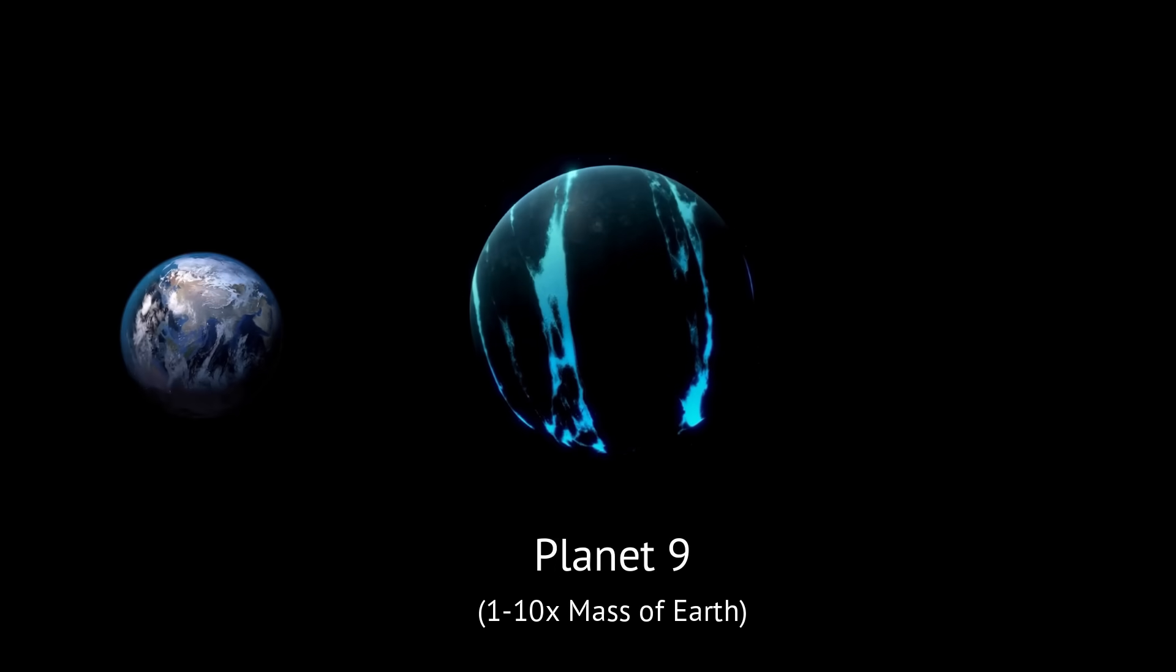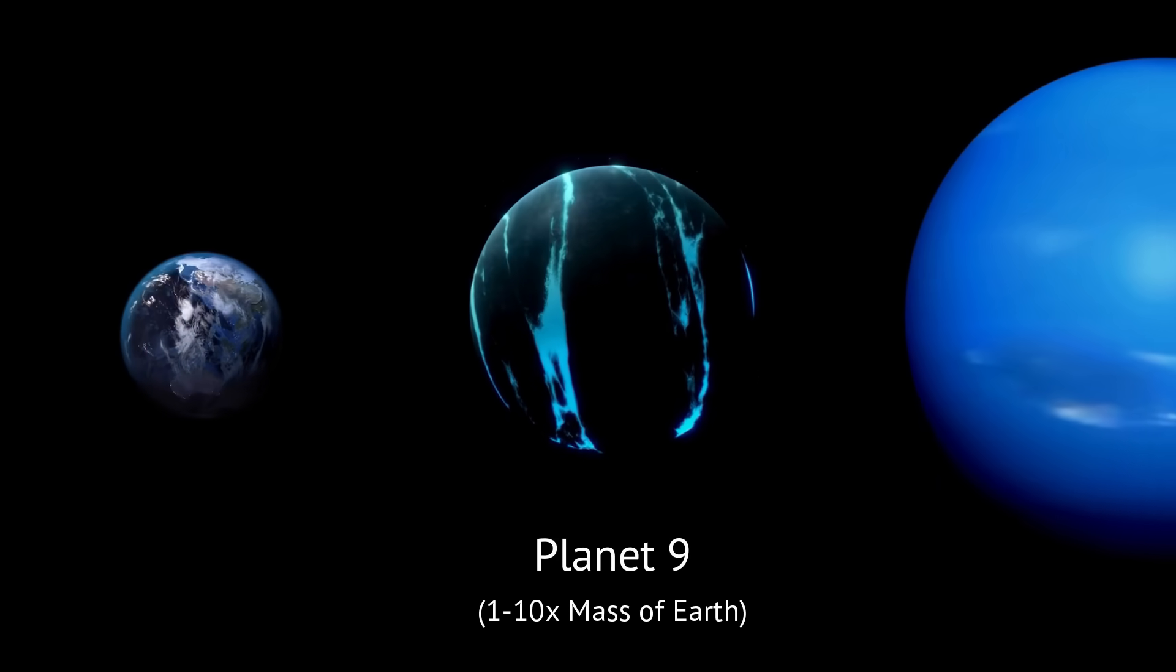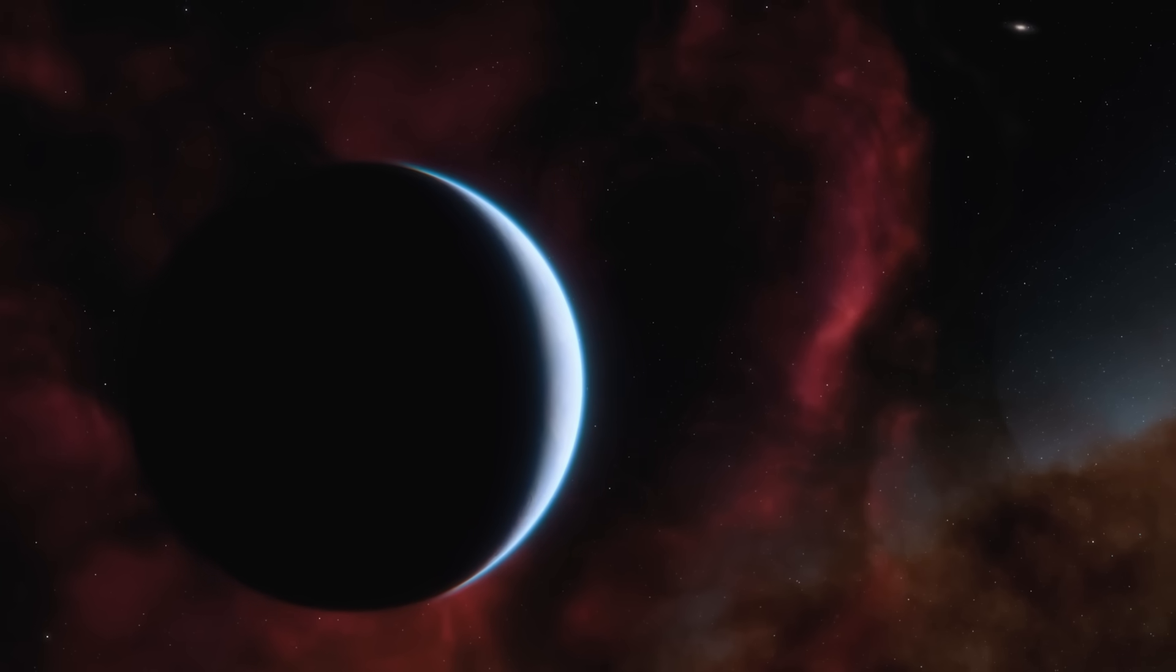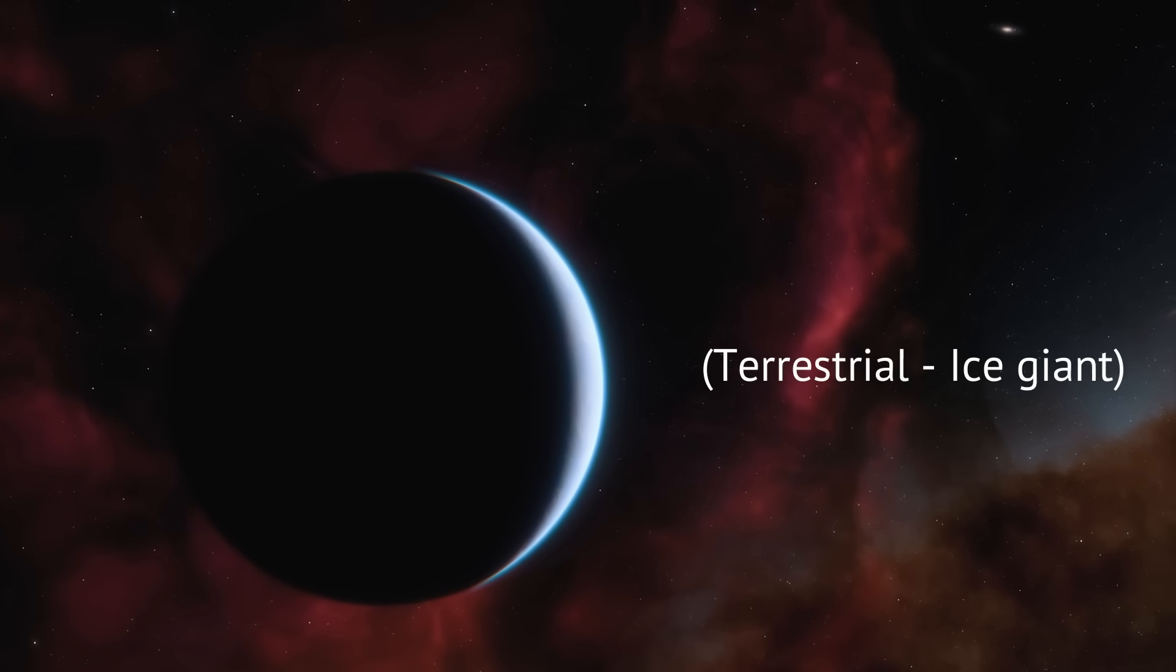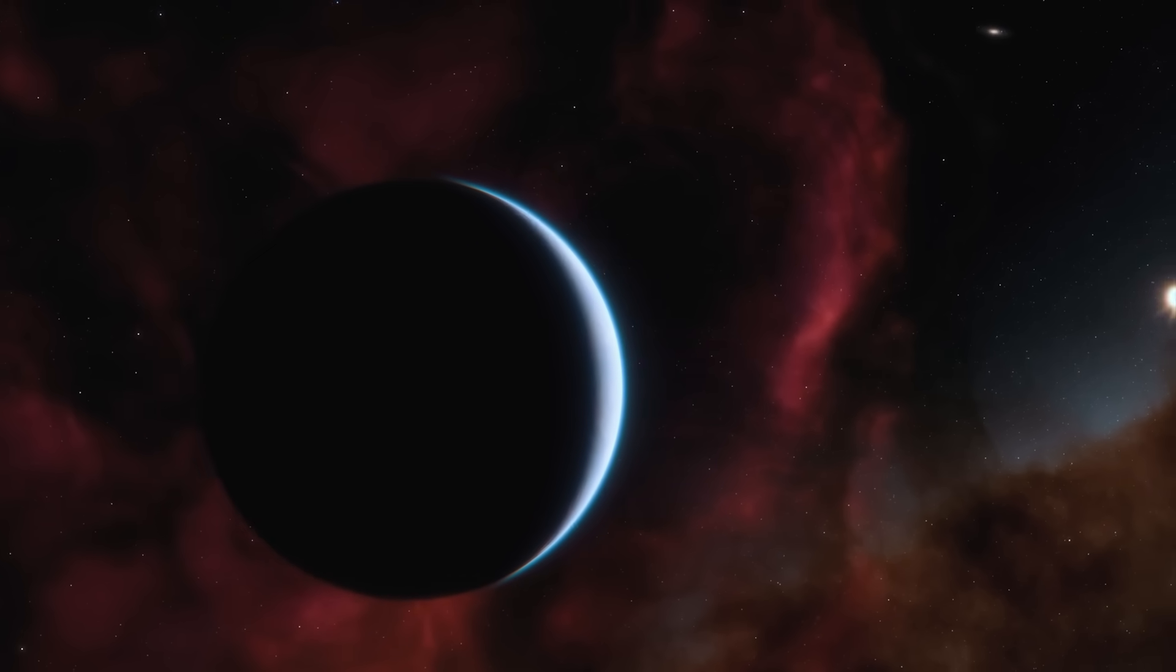So the object itself likely is more massive than the Earth, probably a little bit less massive than Neptune. It sits right in between that terrestrial to giant icy planet range. Its orbit, unlike the orbits of the known planets, is not nearly circular and planar. Instead, it is exceptionally wide, 20 times bigger than the orbit of Neptune.